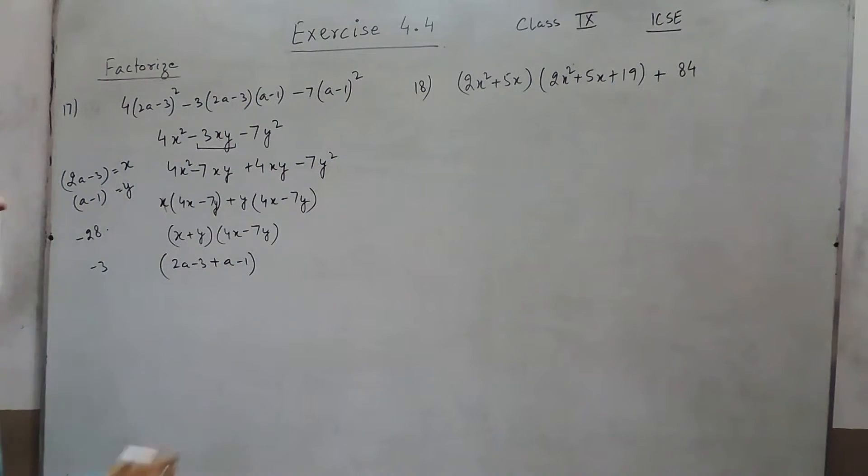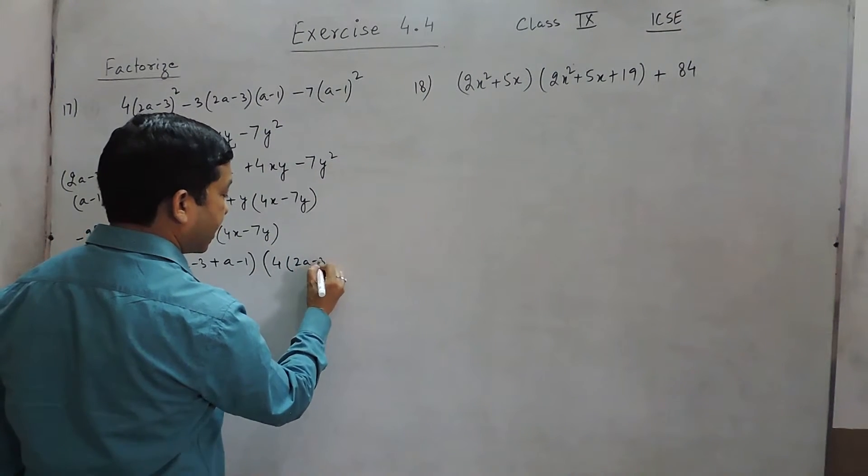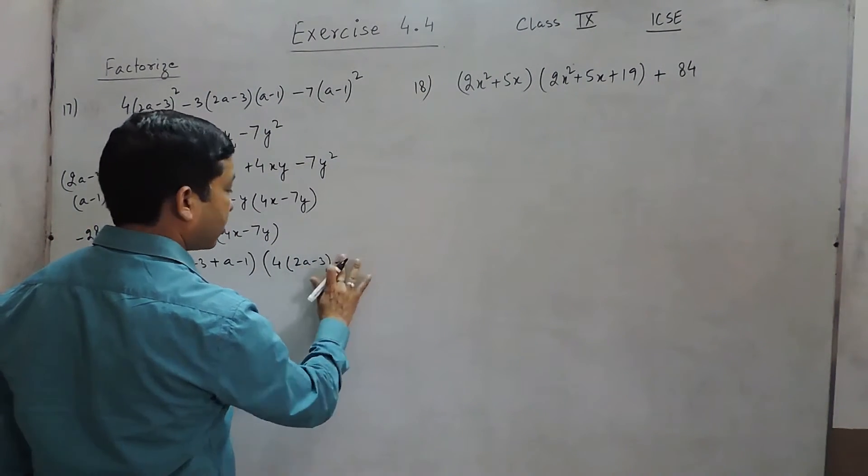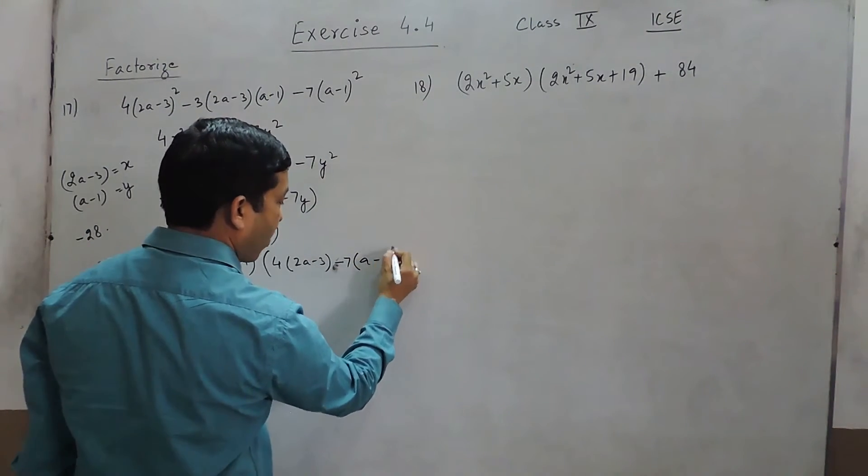And the second factor becomes 4 into the value of x that is (2a - 3) minus 7 into the value of y that is (a - 1).